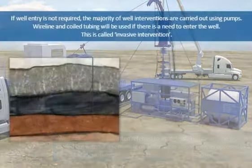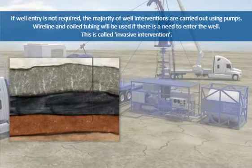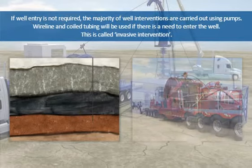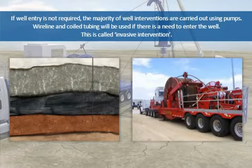If well entry is not required, the majority of well interventions are carried out using pumps and wireline. Coiled tubing will be used if there is a need to enter the well — this is called invasive intervention.